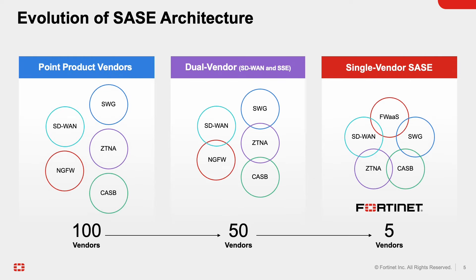Let's look at the evolution of the SASE architecture. It started as point product vendors — things like SD-WAN, NextGen Firewall, ZTNA, CASB, and Secure Web Gateway. There were 10 to 20 vendors in each of these categories, probably 100 vendors overall.